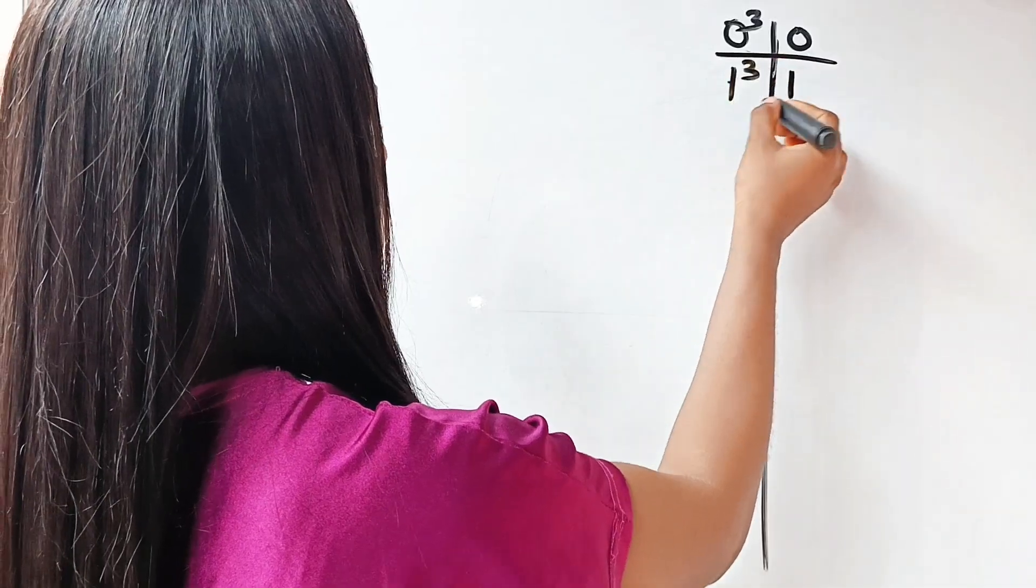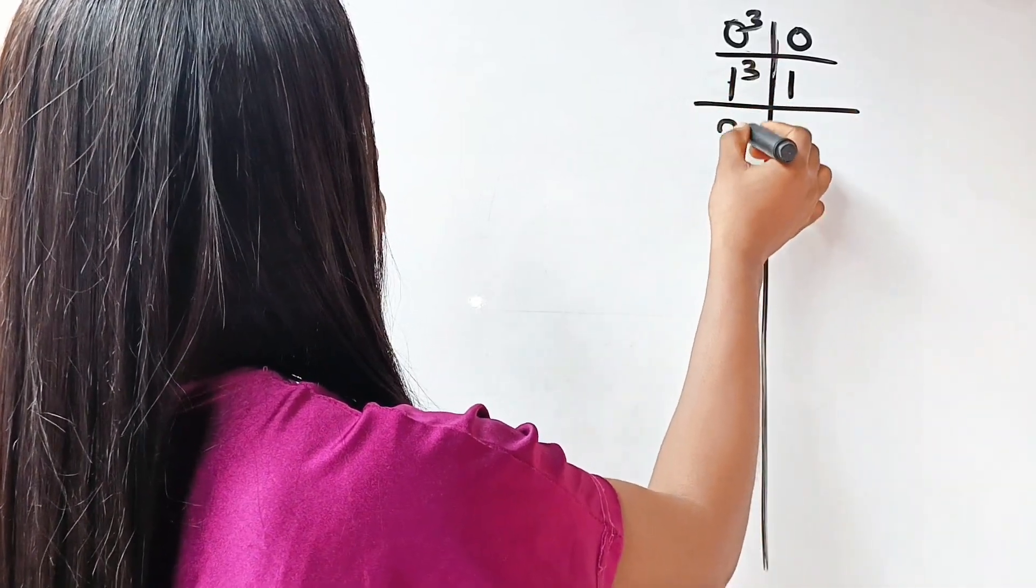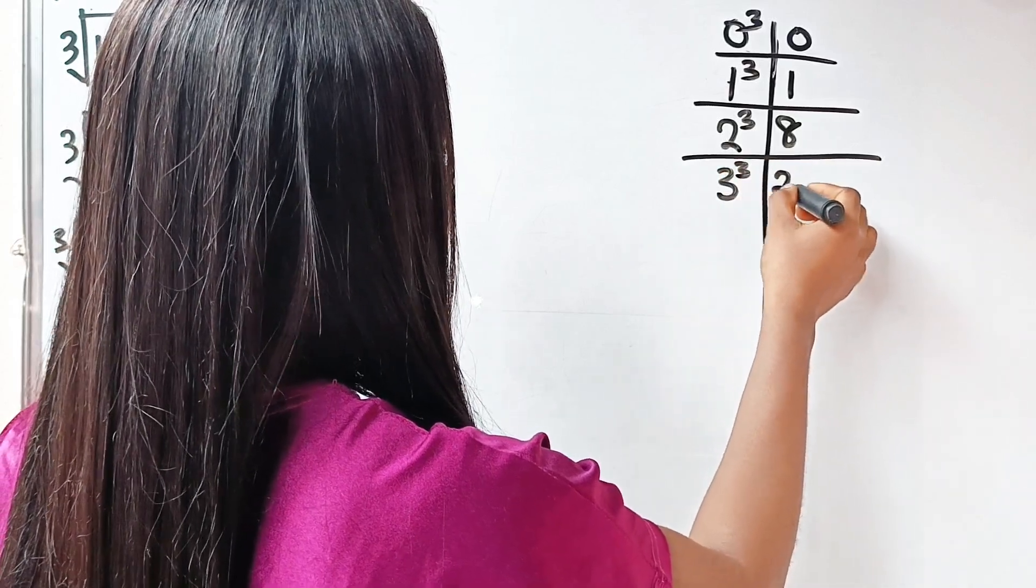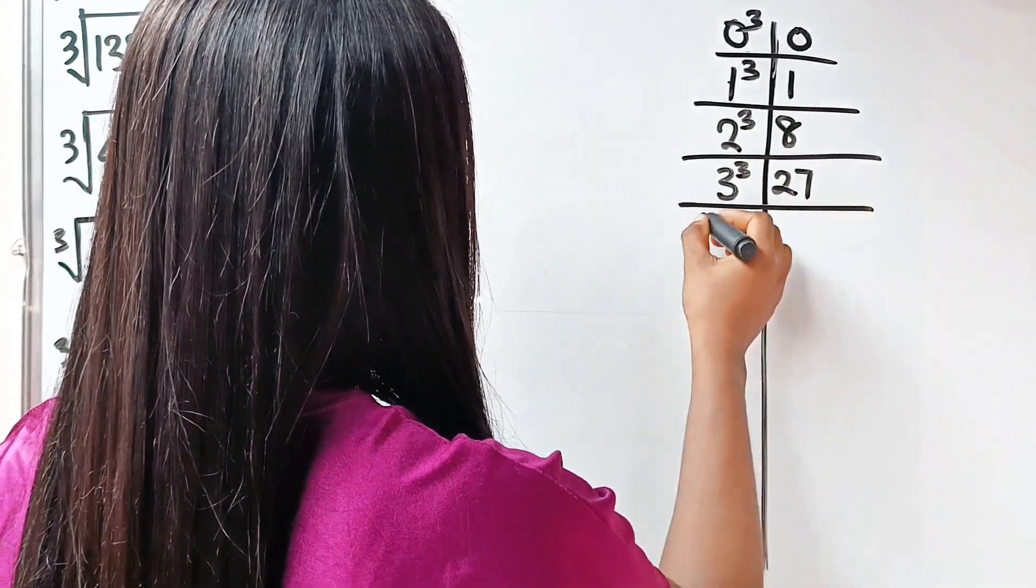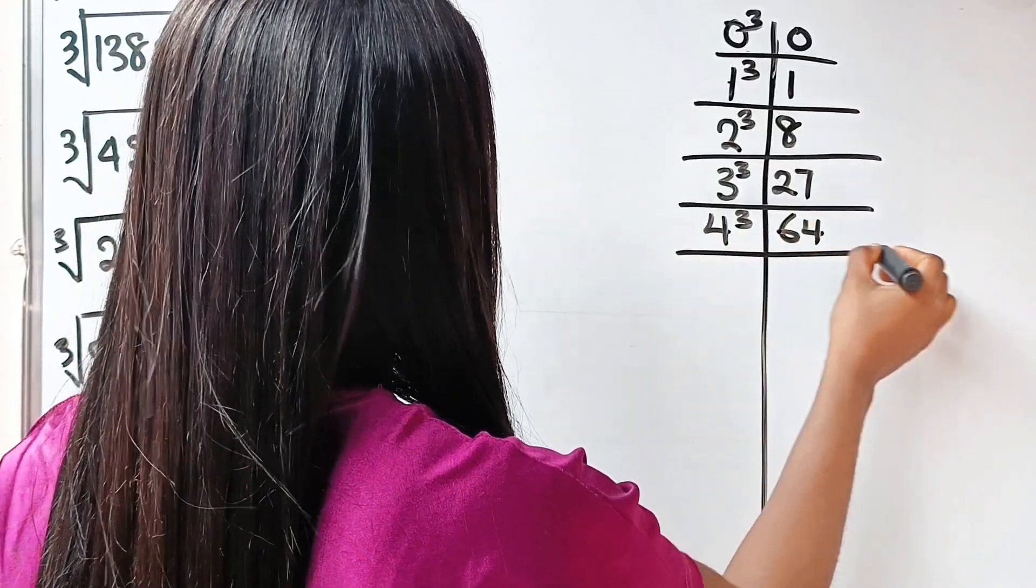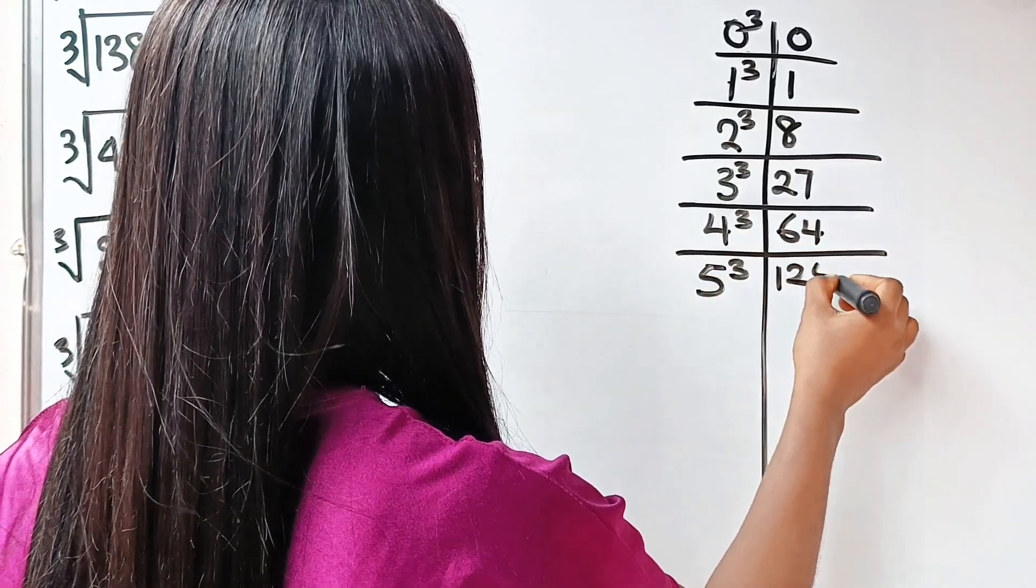1 cubed is 1. 2 cubed is 8. 3 cubed is 27. 4 cubed is 64. 5 cubed is 125.